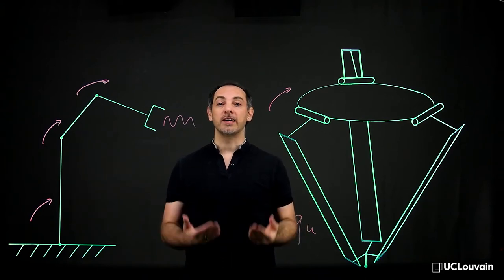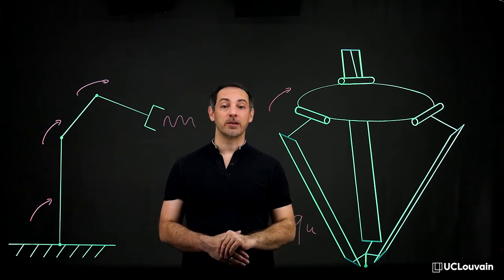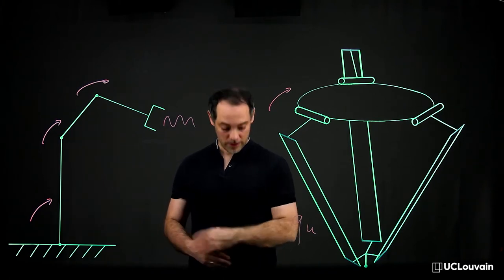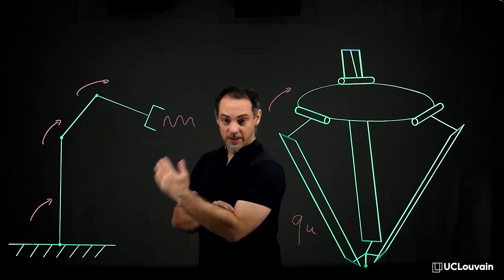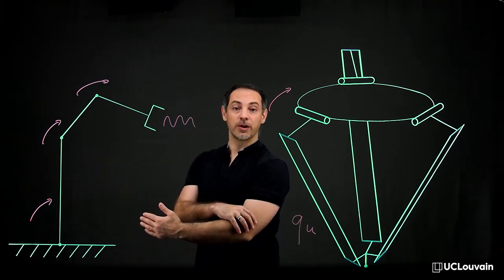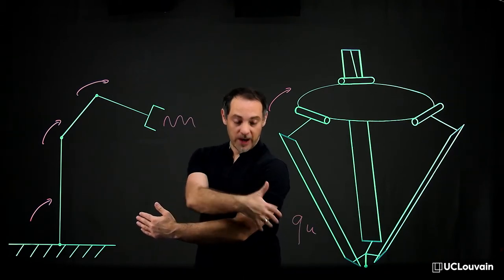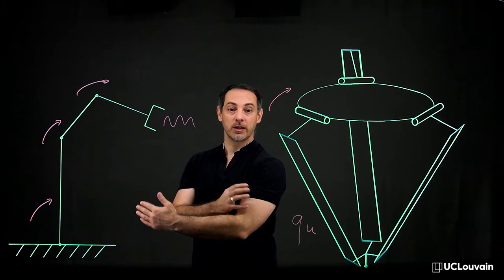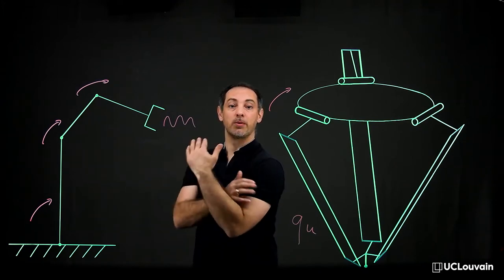One can easily find both cases in the human body. For example, the elbow flexion extension has one degree of freedom but is overactuated by several muscles including the biceps and triceps brachii.